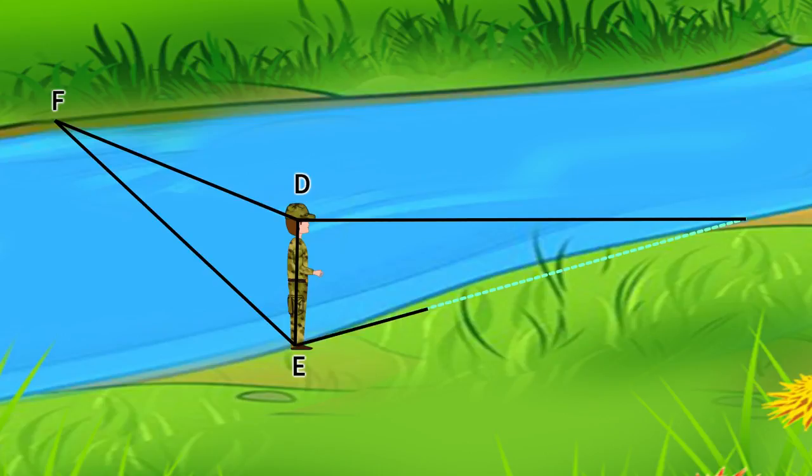The officer then paced the distance to this spot, marked it, and concluded that the distance between the two spots was the width of the river.